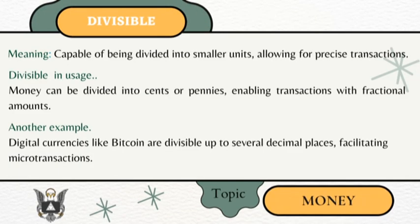Divisible — meaning capable of being divided into smaller units, allowing for precise transactions. Money can be divided into cents or pennies, enabling transactions with fractional amounts. Digital currencies like Bitcoin are divisible up to several decimal places, facilitating microtransactions.